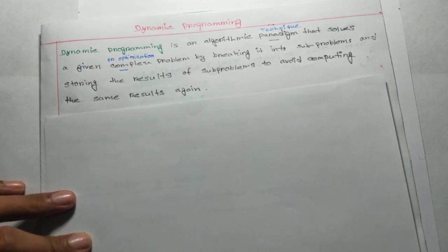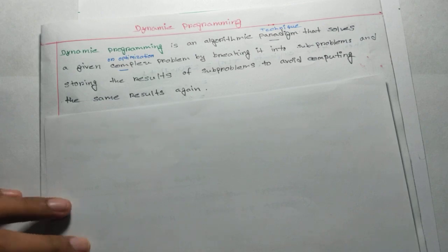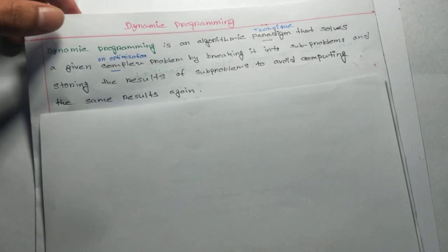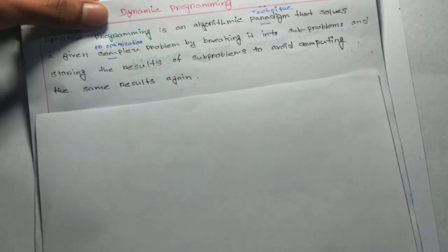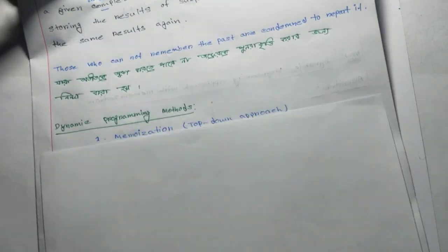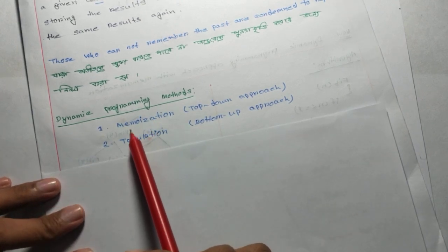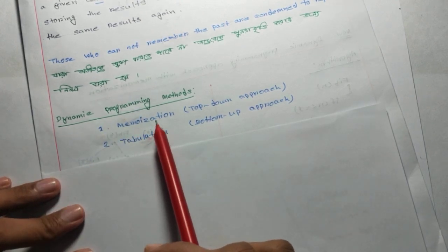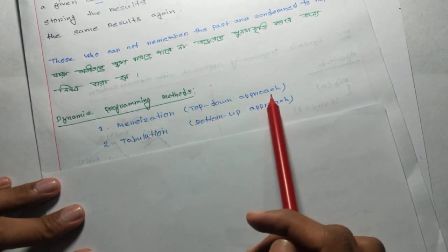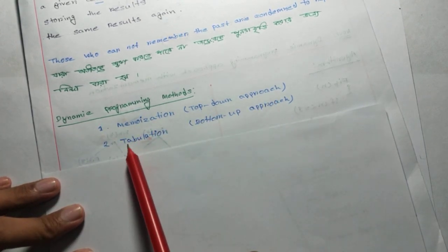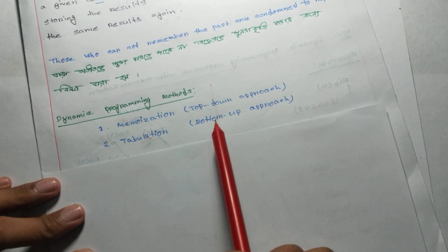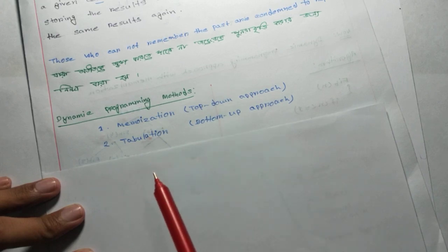This method is related to memory storage. There are two methods: the Memoization Method and the Tabulation Method. The Memoization Method is a top-down process and the Tabulation Method is a bottom-up process.